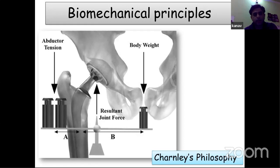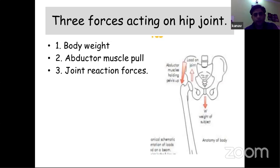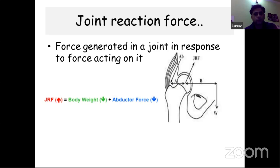Because the abductor lever arm is shorter, the abductors must produce more tension to keep the hip balanced and prevent the opposite side of the pelvis from dipping. Three types of forces act on the hip joint: body weight, abductors, and the joint reactive force in the opposite direction. These joint reactive forces play an important role in hip arthroplasty, as an increase or decrease can lead to early wear or loosening.